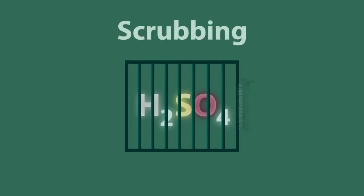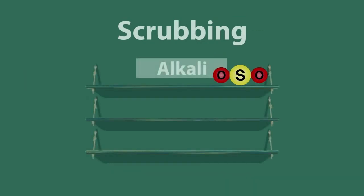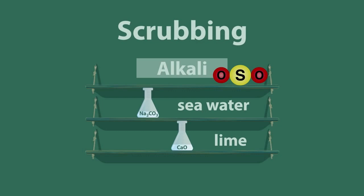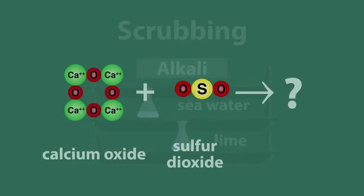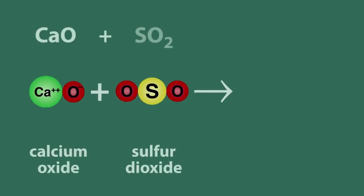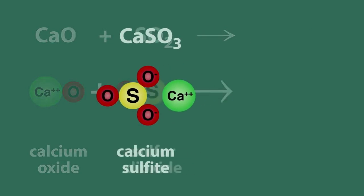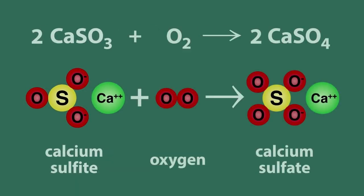A much better method is to trap the acid before it reaches the atmosphere in a process called scrubbing. The kind of scrubber we need in this case is an alkali to react with the sulfur dioxide. So either seawater, which contains a little bit of sodium carbonate, or lime — calcium oxide — is used. Calcium oxide plus sulfur dioxide makes calcium sulfite, CaSO₃. The sulfite can be reacted with oxygen to make gypsum, calcium sulfate CaSO₄, which is the main ingredient of wall plaster. These scrubbers have greatly reduced our sulfur emissions and given many countries much cleaner air.